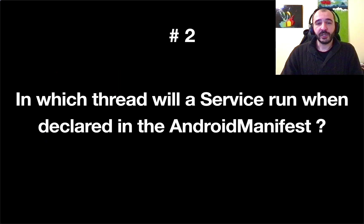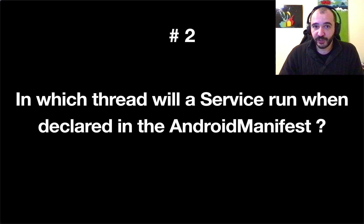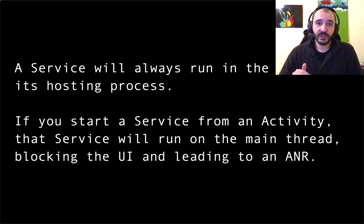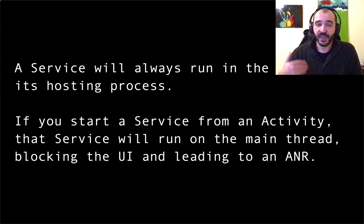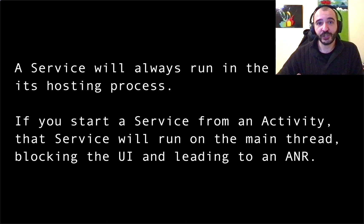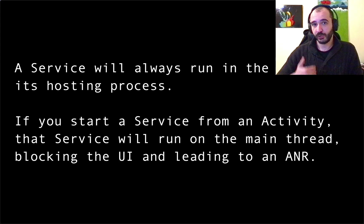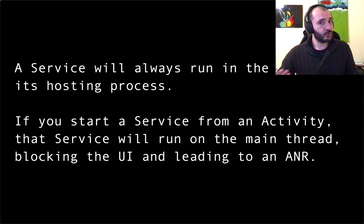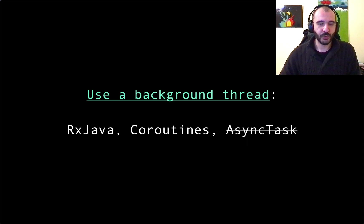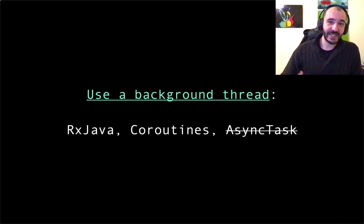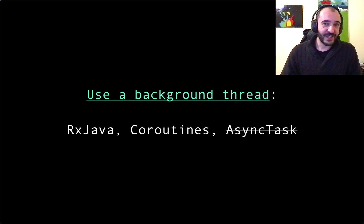Number two: by default, in which thread will a service run if you define that service in the Android manifest? A service will always run in the thread from where it started. So if you start a service from an activity, that service is going to run on the main thread, which is going to block the UI and cause an Application Not Responding exception. So you shouldn't do that — instead, use a background thread using RxJava or coroutines.